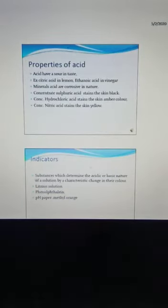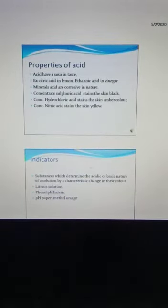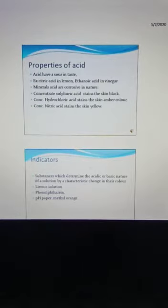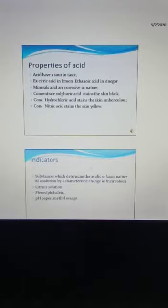Properties of Acid: Acids have a sour taste. For example, citric acid in lemon and acetic acid in vinegar are acids. Mineral acids are corrosive in nature. Concentrated sulphuric acid stains the skin black. Hydrochloric acid stains the skin amber color, and nitric acid stains the skin yellow color.